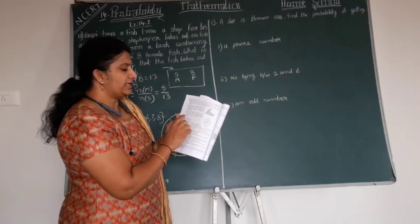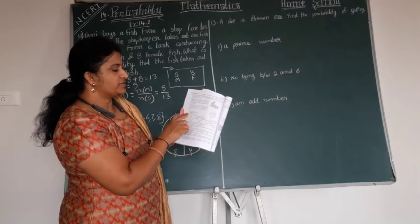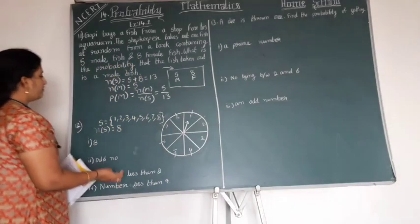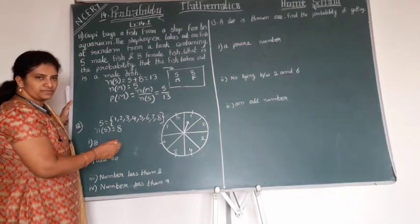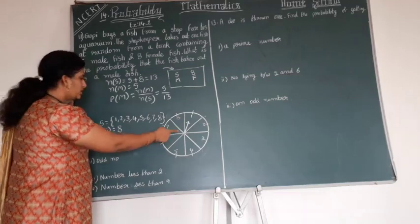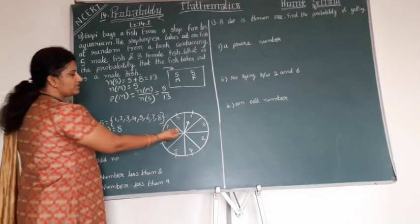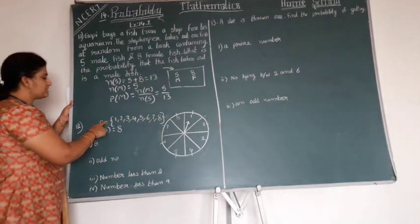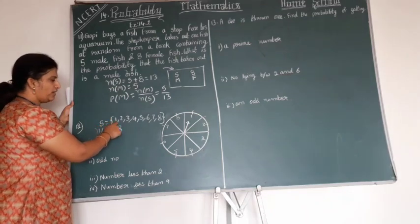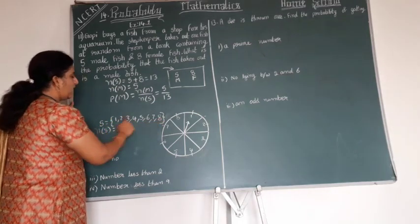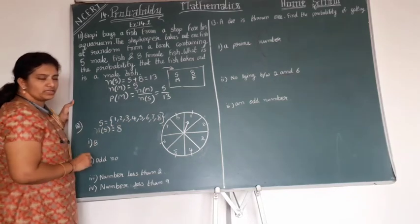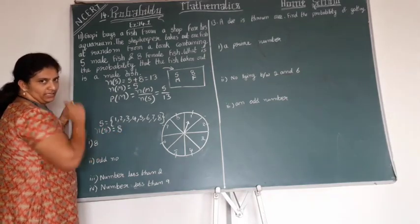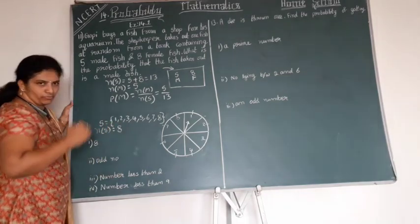What is the probability that it will point at? We have 4 sub-questions here. Before that, I am going to write the total sample spaces in this spinning wheel. The sample spaces are written by the letter S — set of 1, 2, 3, 4, 5, 6, 7, 8. The number of sample spaces N of S is equal to 8. This is common for all the sub-questions. The sample space won't change anywhere, but the event questions might be changing.